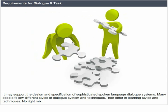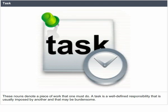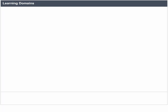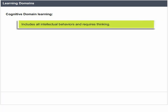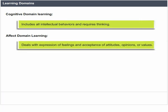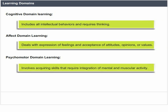There is no single right mix for tasks. A task is a well-defined responsibility that is usually imposed by another and that may be burdensome. Learning domains include: cognitive domain, which covers all intellectual behaviors and requires thinking; affective domain, which deals with expression of feelings and acceptance of attitudes, opinions or values; and psychomotor domain, which involves acquiring skills that require integration of mental and muscular activity.